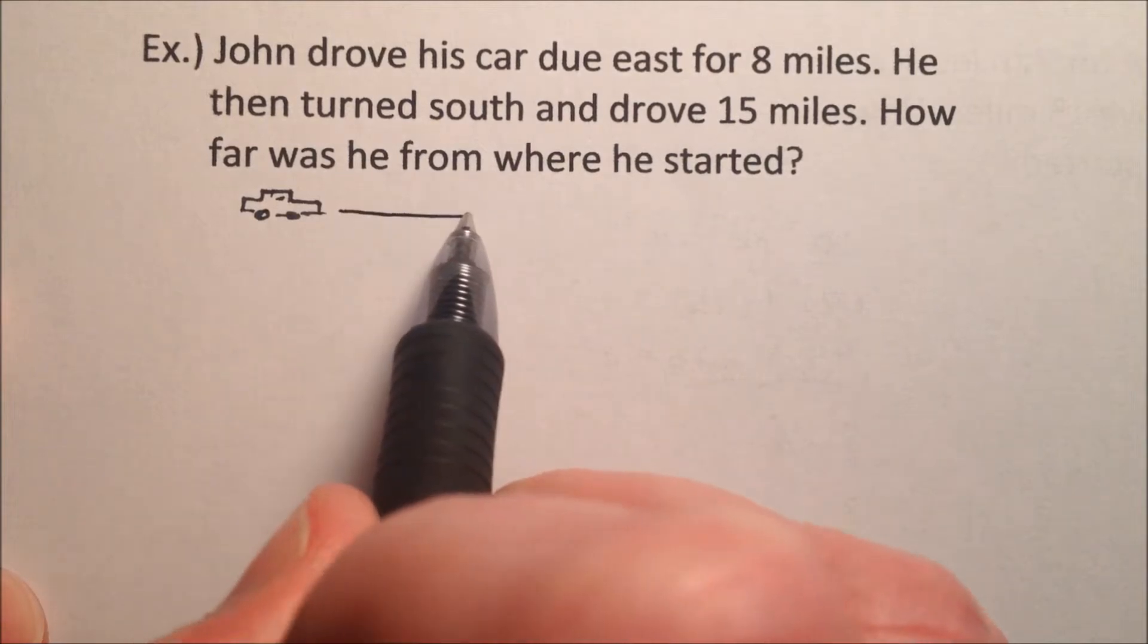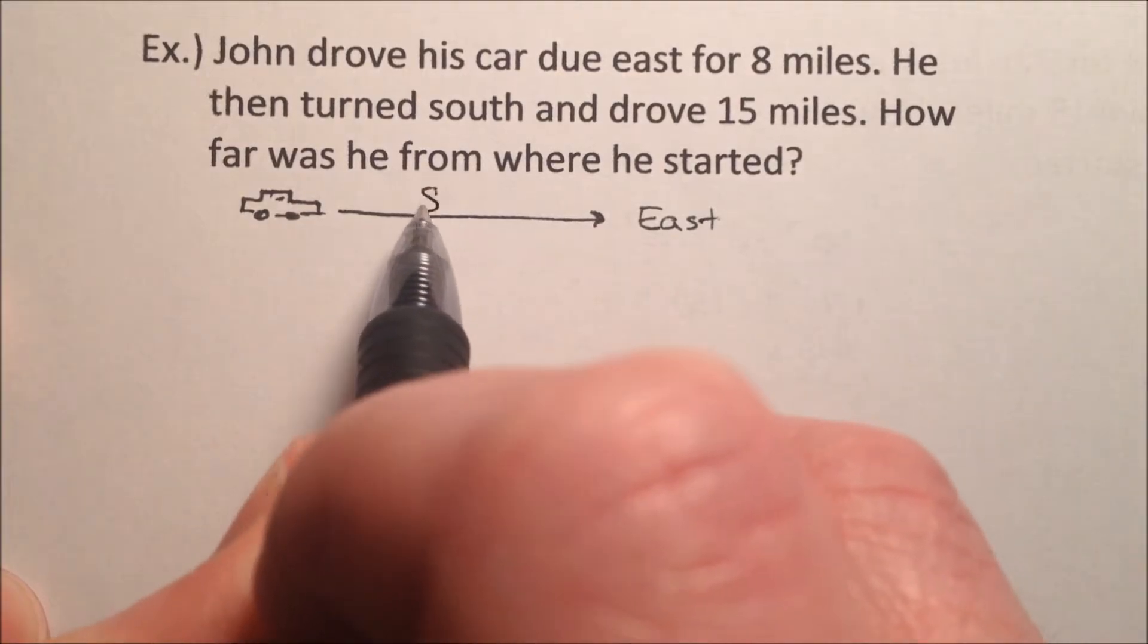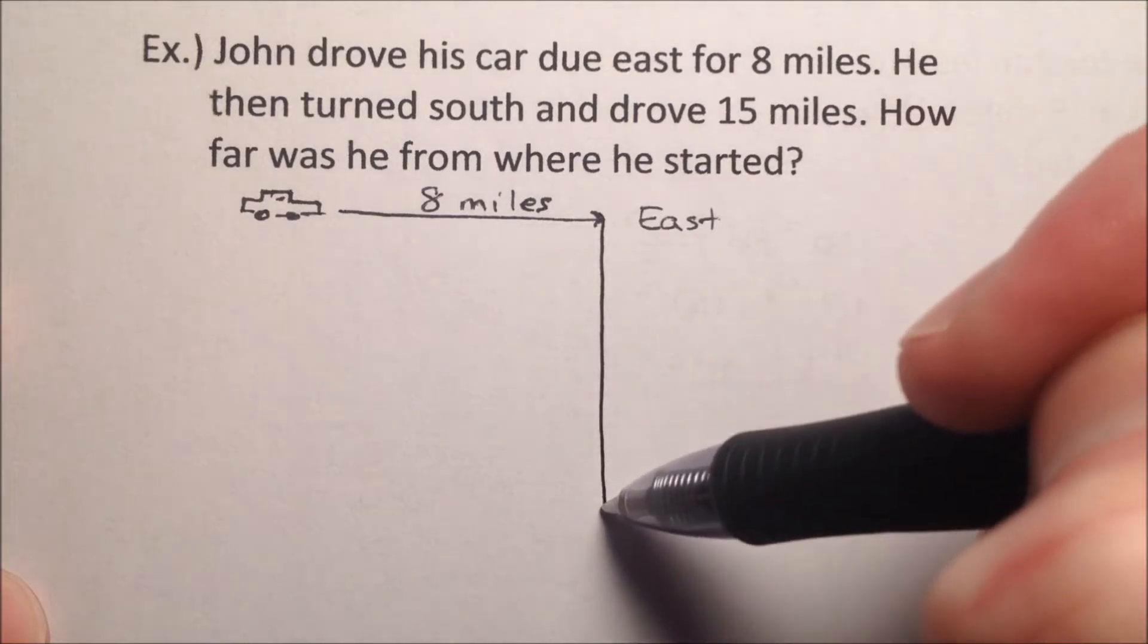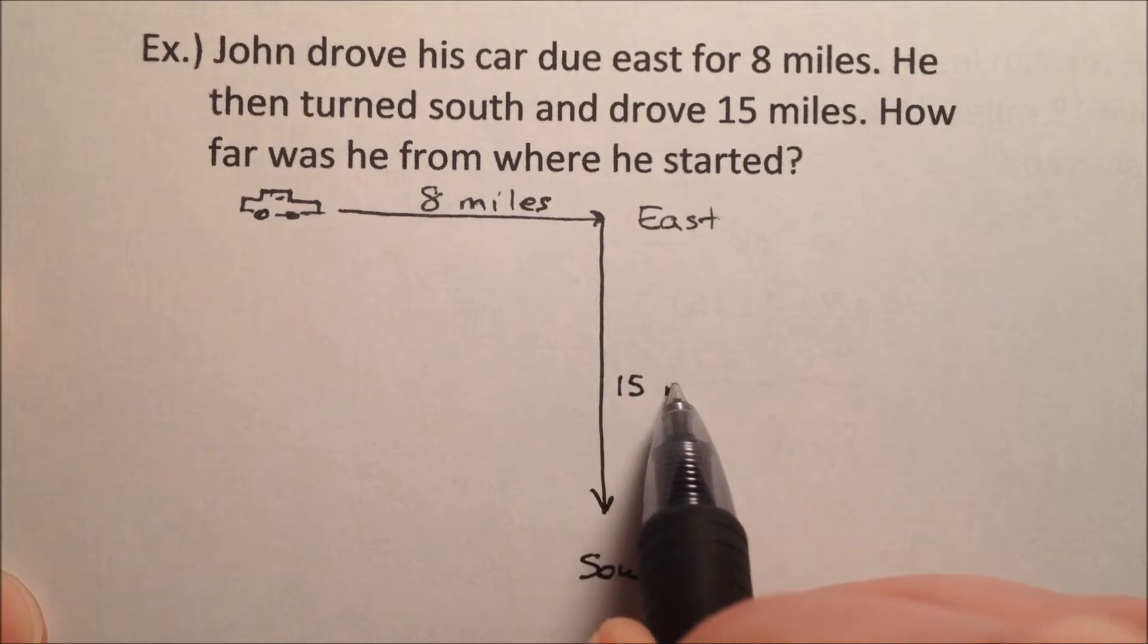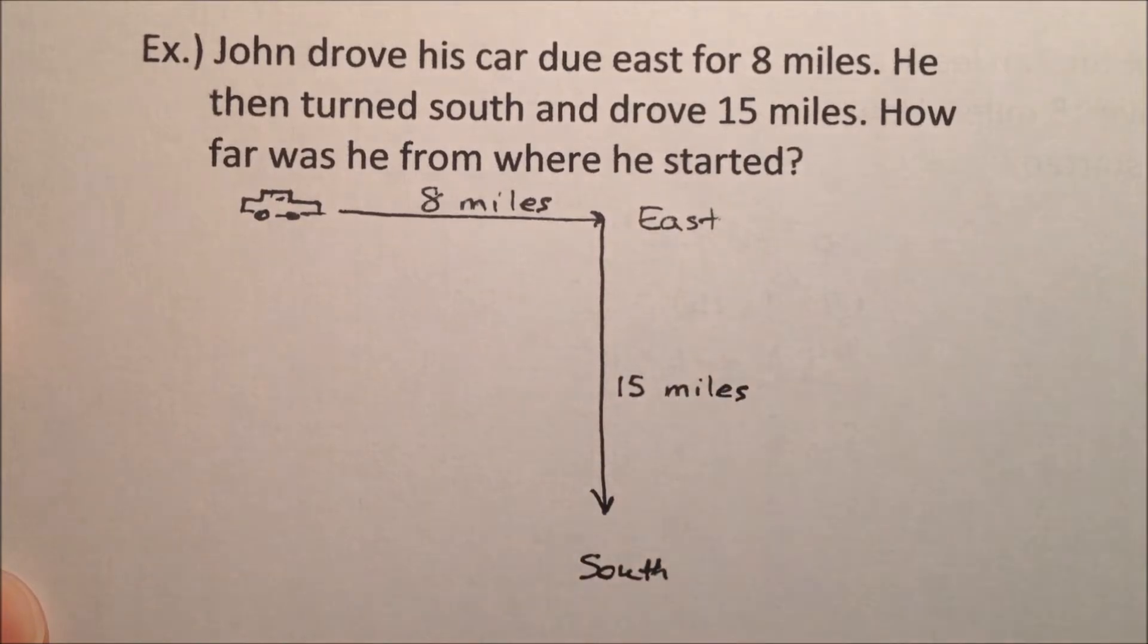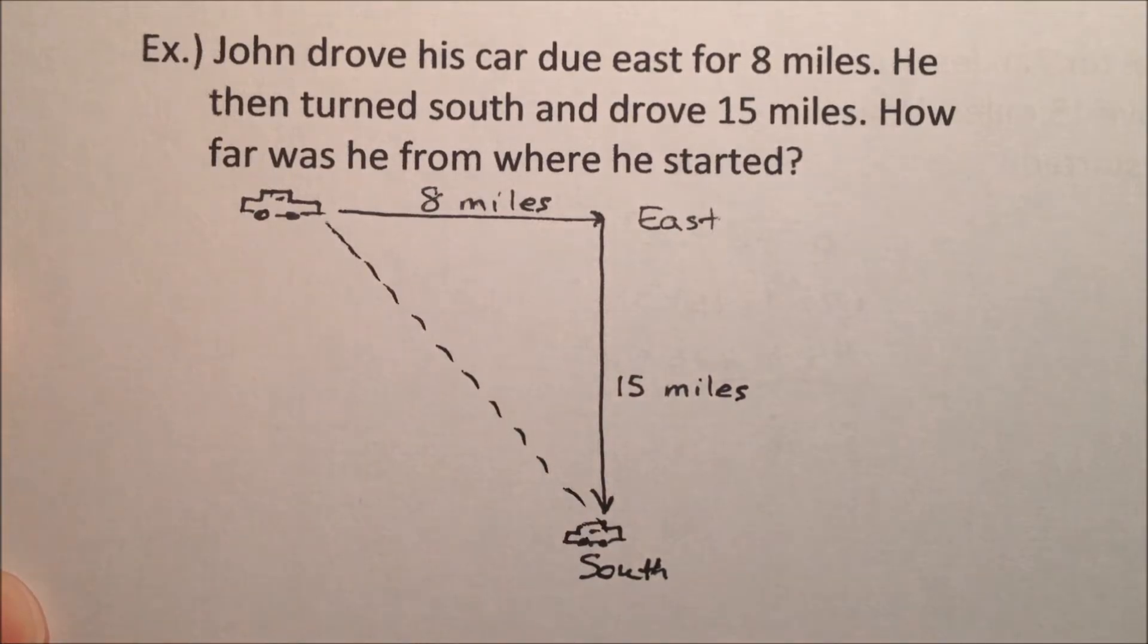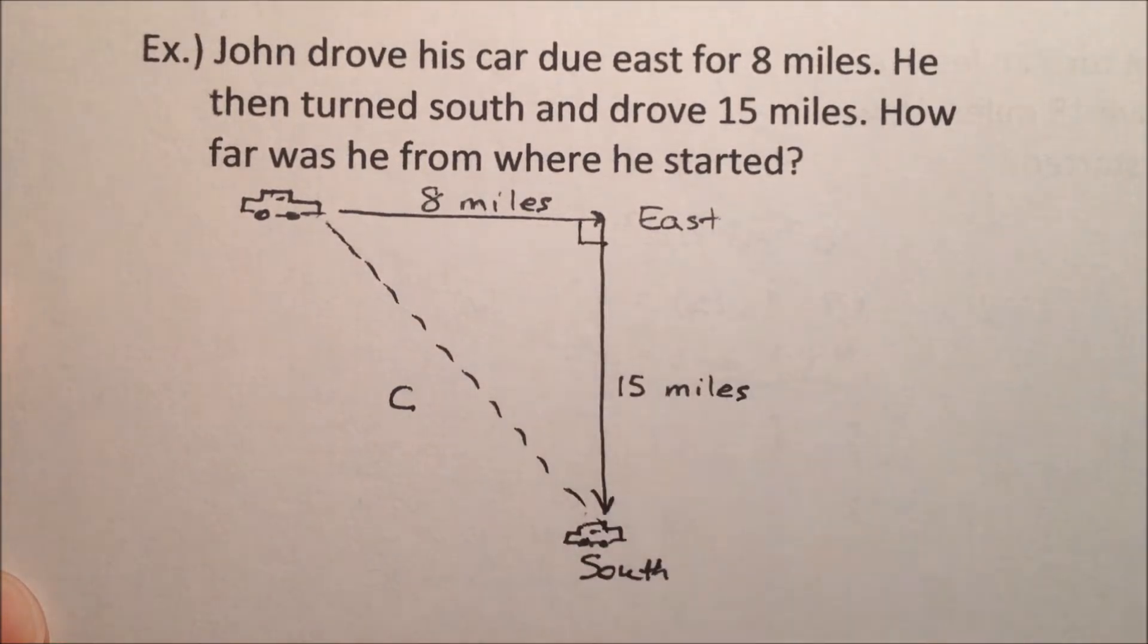Okay, and he's going eight miles due east. And this is eight miles. And then he turns and goes 15 miles south. So we're headed south, and this guy is 15 miles. And we want to know how far is he now from where he started. So we could draw a little dash line in there and say we're looking for this length right there. We could call it C because it looks like it's going to be the hypotenuse of a right triangle.